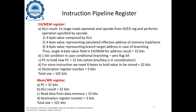Now moving to the fourth register — the MEM/WB register. The PC value has to be stored, so that is 32 bits. The ALU result also has to be stored, so that is another 32 bits. Then you need the read data from the data memory, which is again 32 bits, and the destination register number is 5 bits. This amounts to a total of 101 bits for the MEM/WB register.